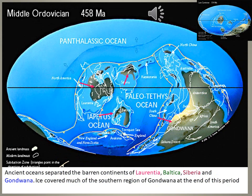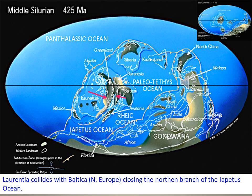In the Middle Ordovician era, 458 million years ago, South America, Africa, and Antarctica slowly started to move towards the northern hemisphere. India and South China were also present here. This trend continued into the Silurian era, 425 million years ago, when Laurentia collided with Baltica, that is northern Europe, closing the northern branch of the Iapetus Ocean.